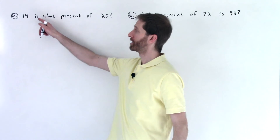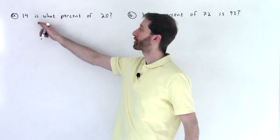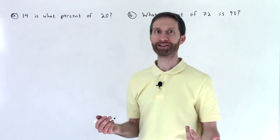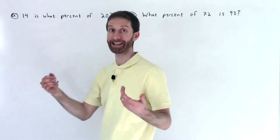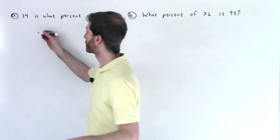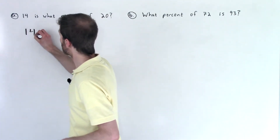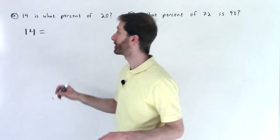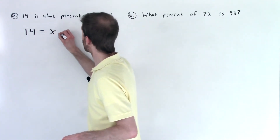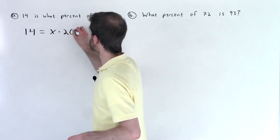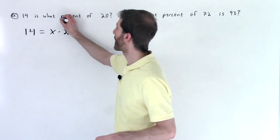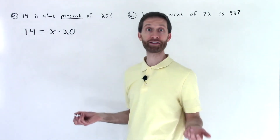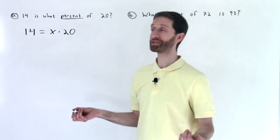We are given the words: 14 is what percent of 20? So I translate this as I read it. 14 is — meaning 14 equals — so I got 14 equals what percent? Well, that would be an unknown amount, so equals x times 20. Notice that our final answer is going to be a percentage. That's all we need to do now is solve out that equation. It's as simple as that.